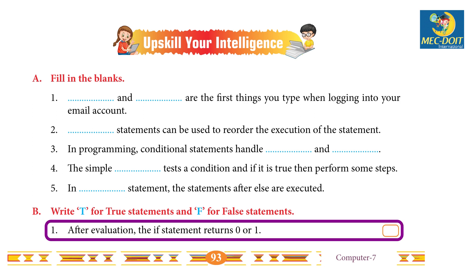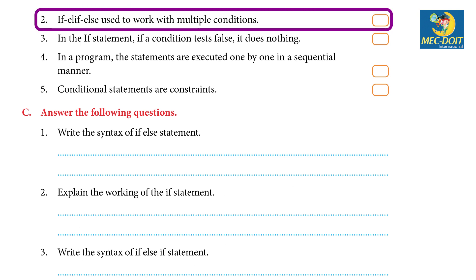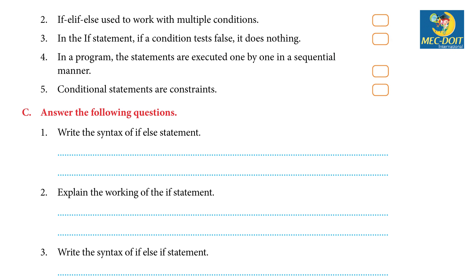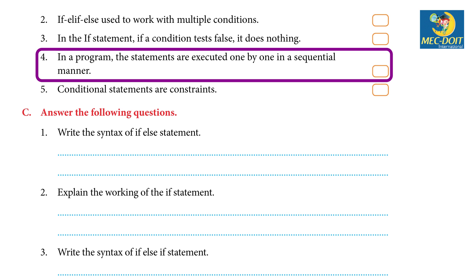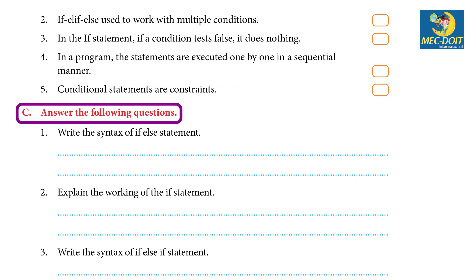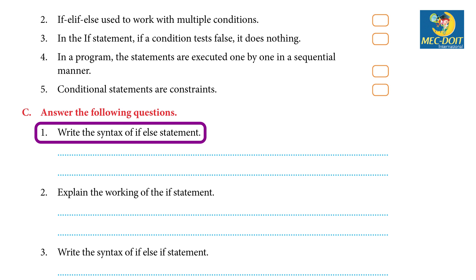Write T for true and F for false: 1. After evaluation, the if statement returns zero or one — False. 2. if-elif-else is used to work with multiple conditions — True. 3. In the if statement, if a condition tests false it does nothing — True. 4. In a program, the statements are executed one by one in a sequential manner — True. 5. Conditional statements are constraints — True.